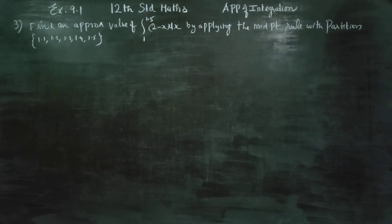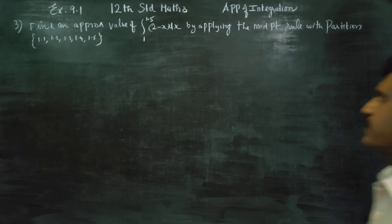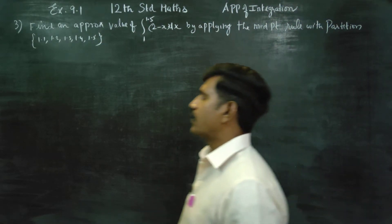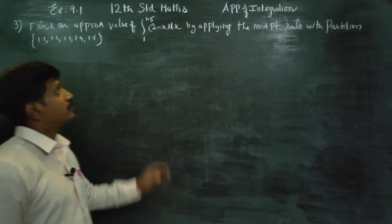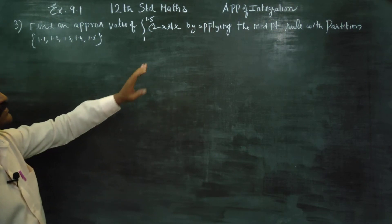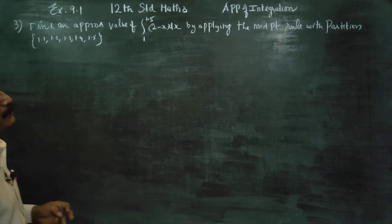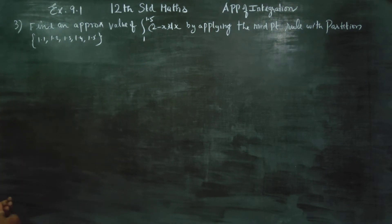Dear 12th standard students, in Exercise 9.1, sum number 3, find the approximate value of the integration from 1 to 1.5 of (2 minus x) by applying the midpoint rule with partition.